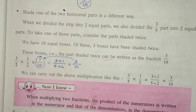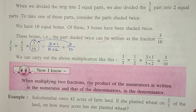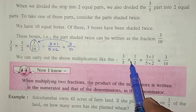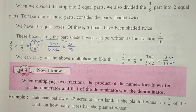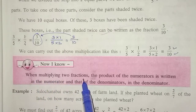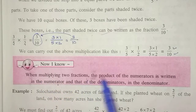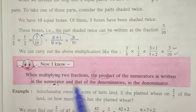It's very simple. The rule to remember is: numerator multiplied by numerator, and denominator multiplied by denominator. So we can carry out the multiplication like this: 3/5 multiplied by 1/2 is equal to 3 multiplied by 1 upon 5 multiplied by 2, which equals 3/10. When multiplying two fractions, the product of the numerators is written in the numerator, and the product of the denominators is written in the denominator.